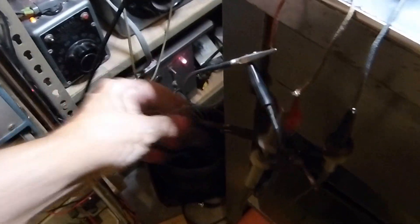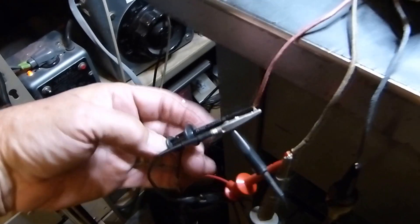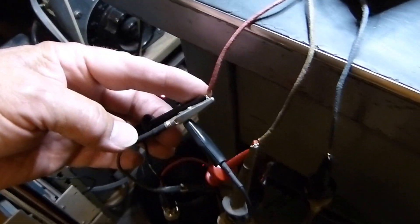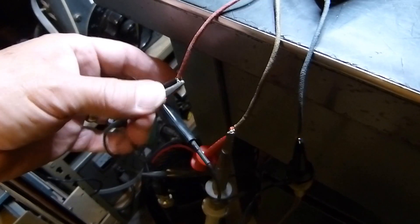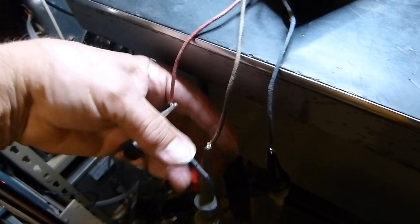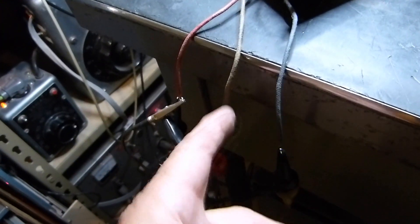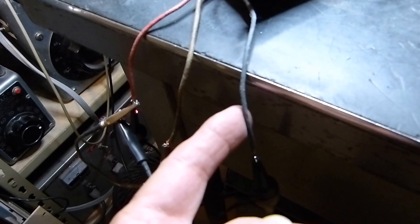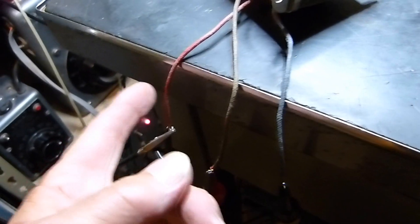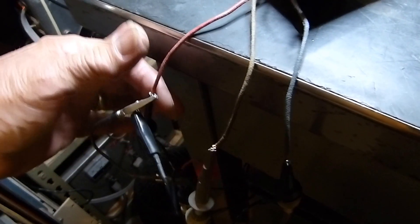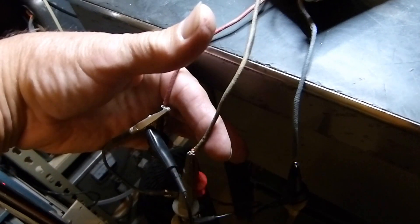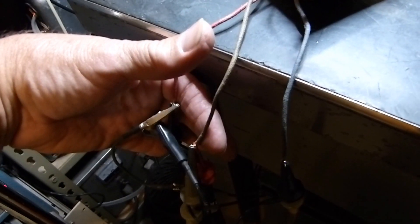I am injecting right here with this red and black lead a signal between the center tap, which is actually going to be like ground, and one side of the transformer. This is the other side of the transformer. This would normally go to one plate lead, this would be the other plate lead. I'm injecting the signal between the center tap and one side.